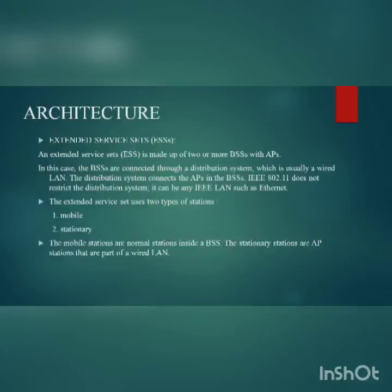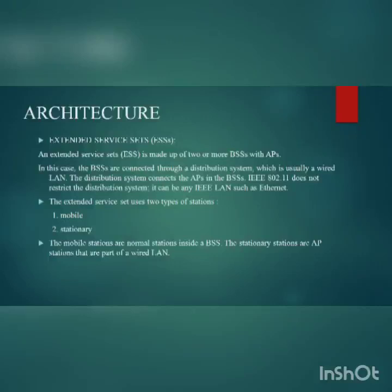A distribution system connects the APs in the BSS. IEEE 802.11 does not restrict the distribution system — it can be any IEEE LAN such as Ethernet. The extended service set uses two types of stations: mobile and stationary. Mobile stations are inside the BSS, while stationary stations are AP stations that are part of a wired LAN.